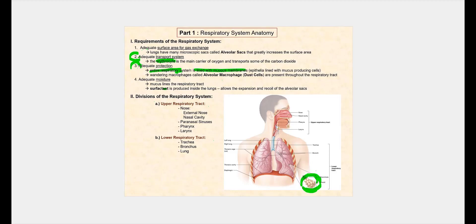In addition to the mucous membranes, we have wandering macrophages called alveolar macrophages or dust cells. These are phagocytic cells, part of our immune cells, that patrol our entire respiratory tract ready to engulf anything that potentially can make us sick.